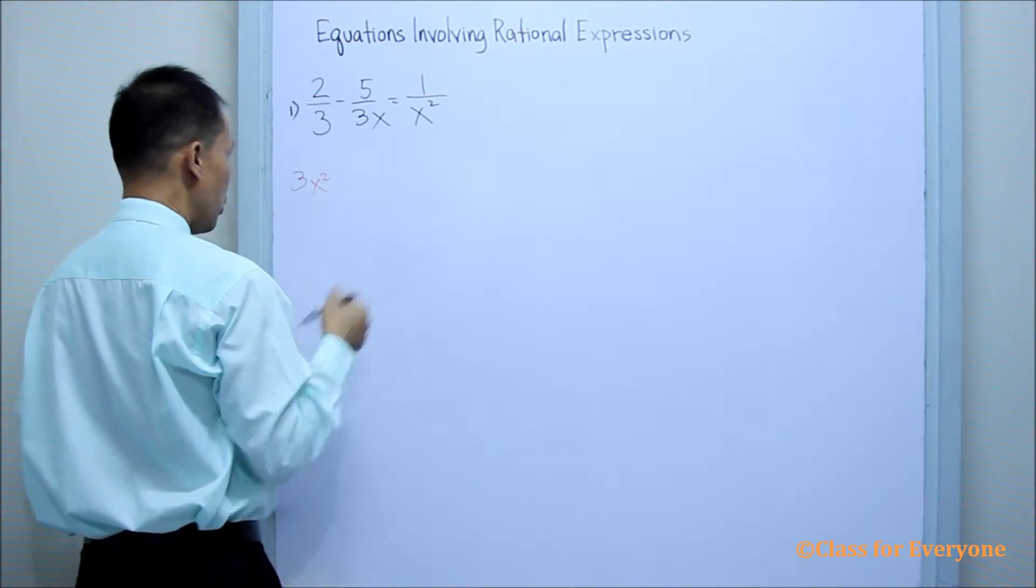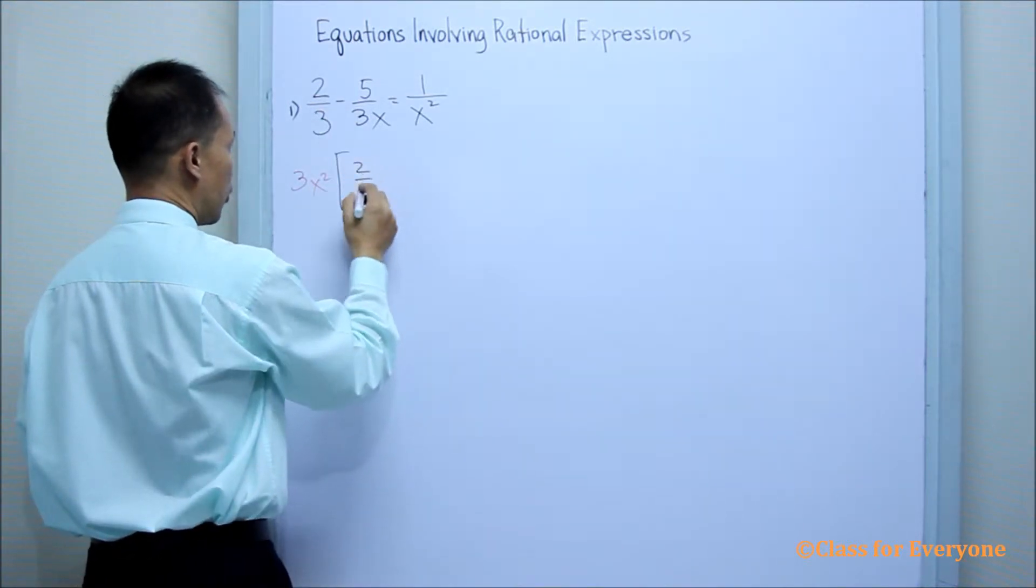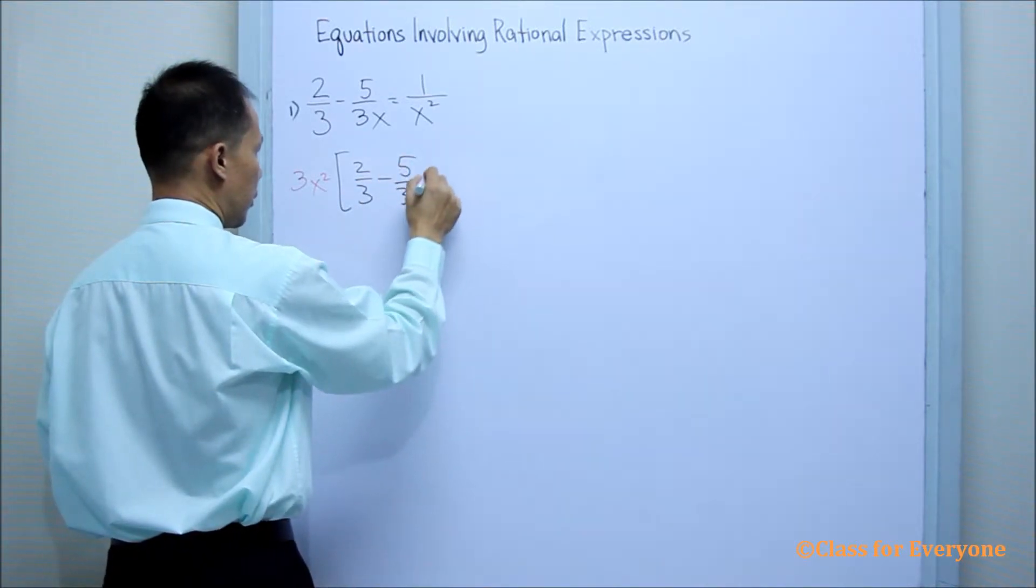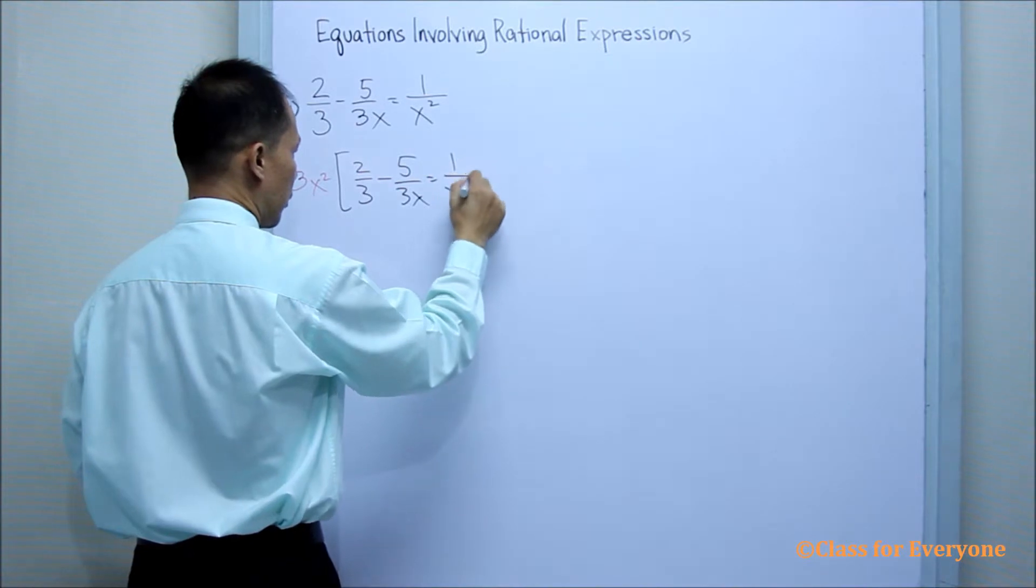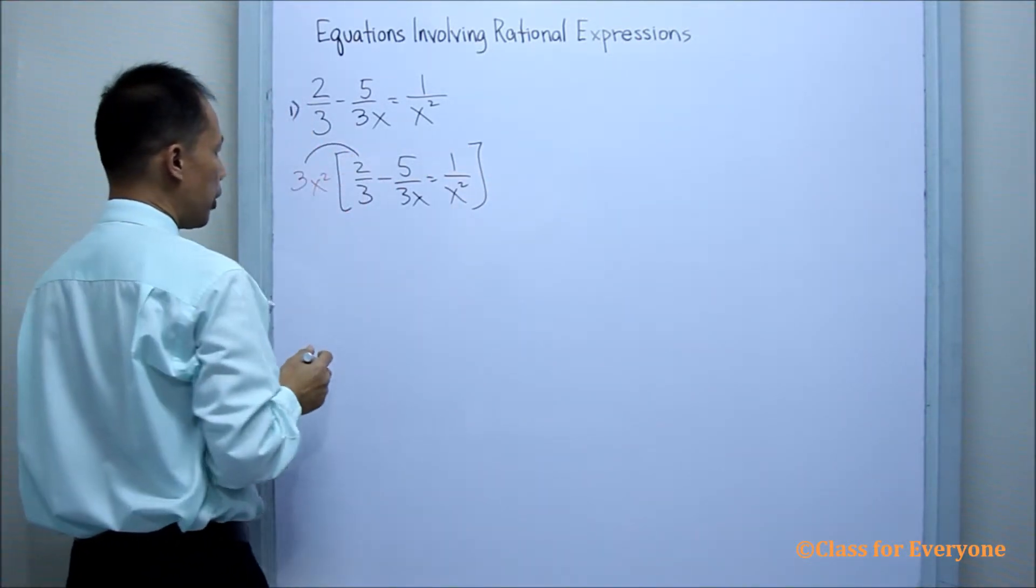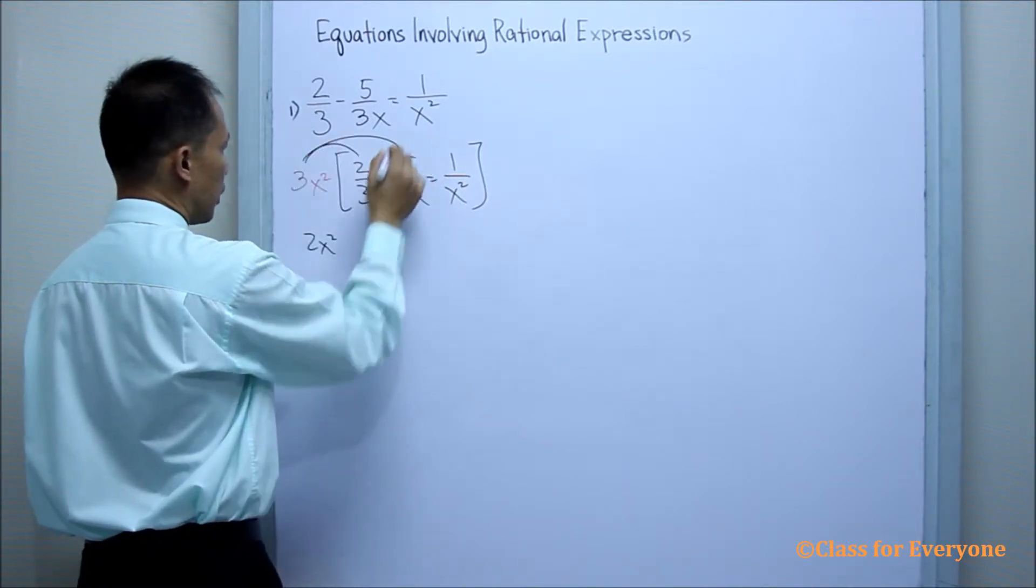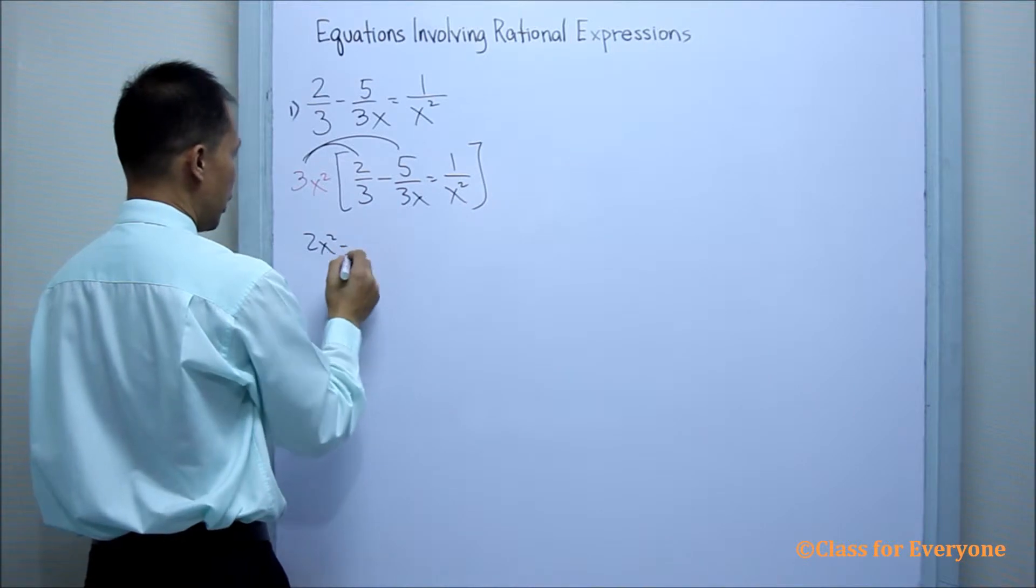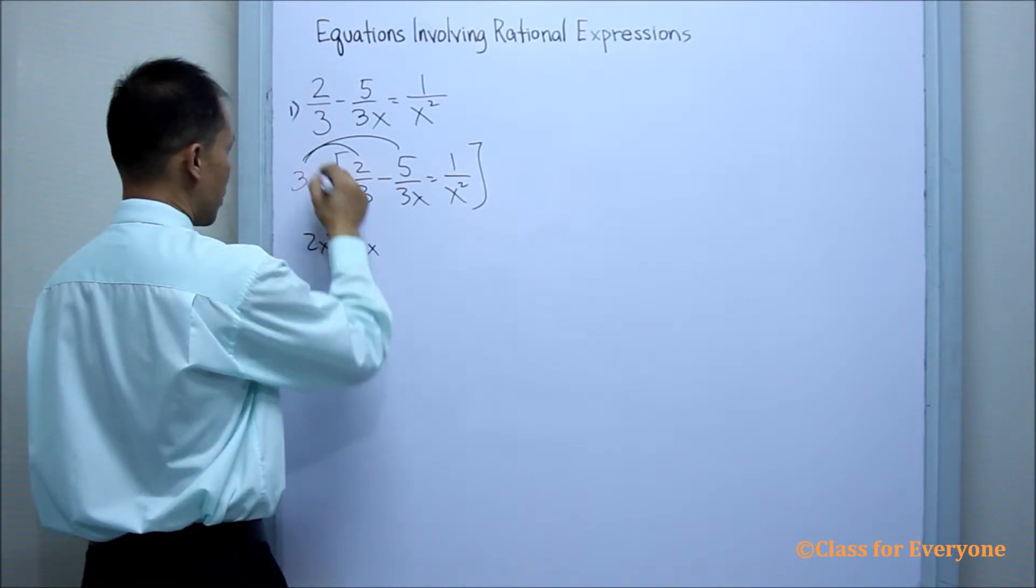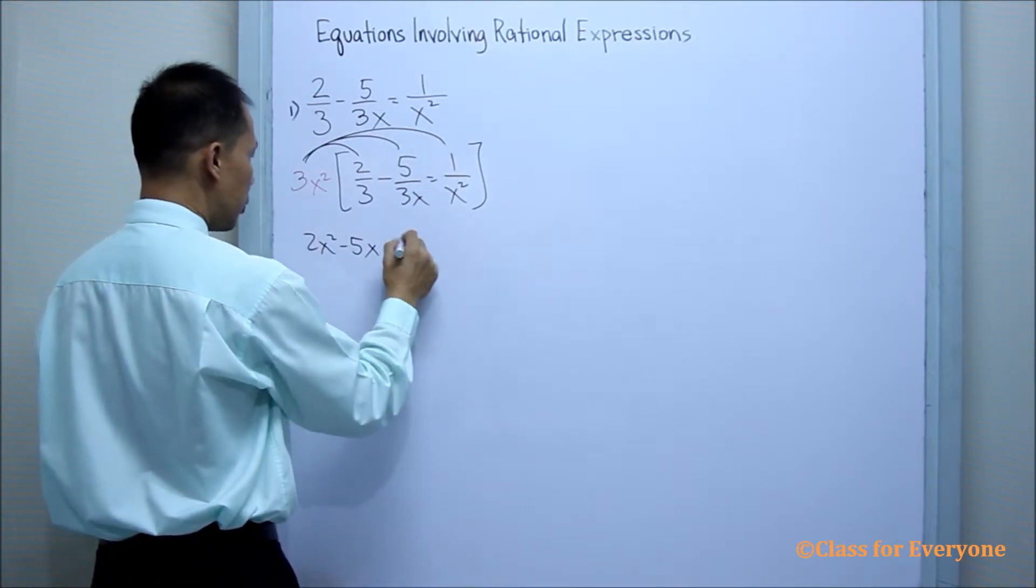So we're going to multiply this LCD to each of the expression. By distributing property, we will have 2x squared. And then this will be negative 5x. And this will be 3.